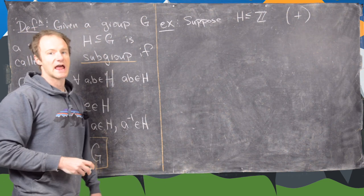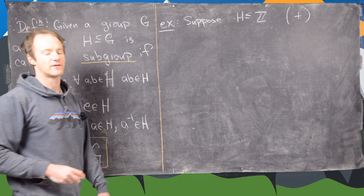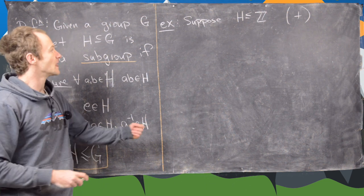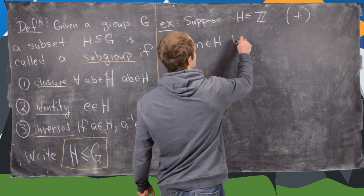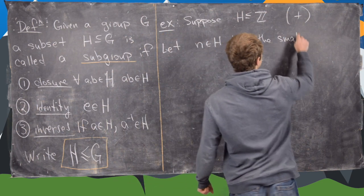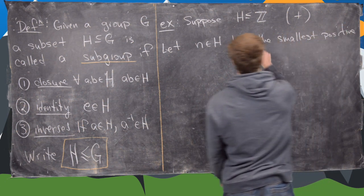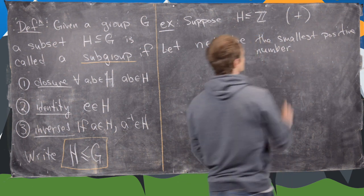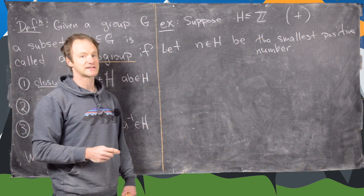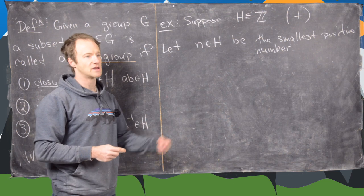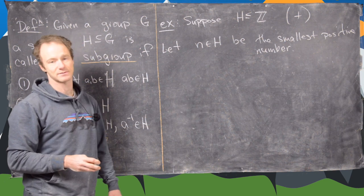We're going to find a form for H — in other words, a form for all subgroups of ℤ. Let N in H be the smallest positive number. If we look only at the positive numbers in H, we're looking at a subset of the natural numbers, and all subsets of the natural numbers contain a smallest element, so we'll let N be that smallest element.